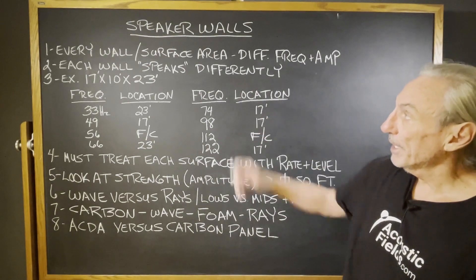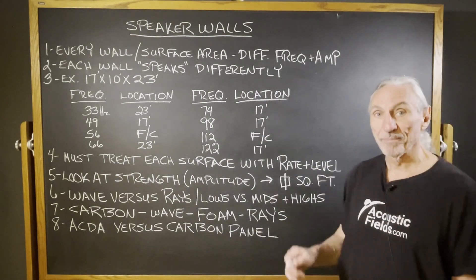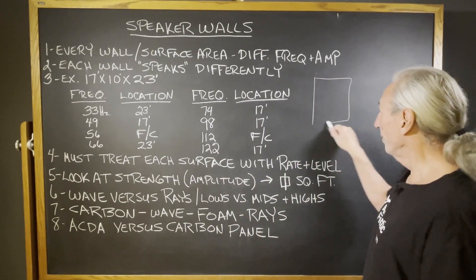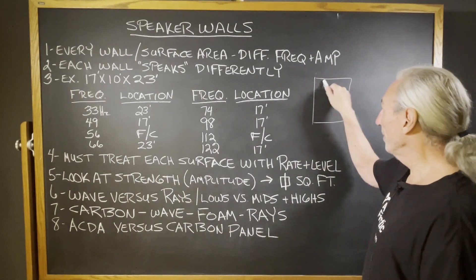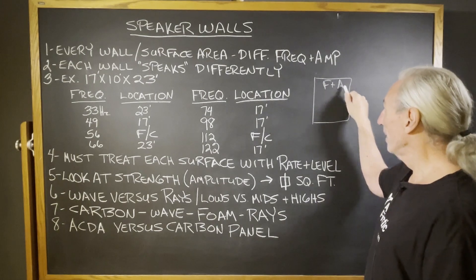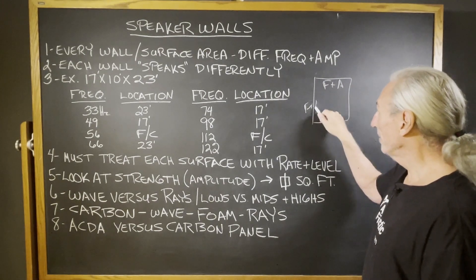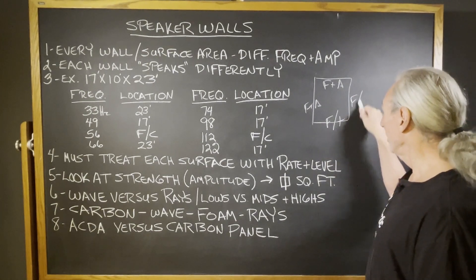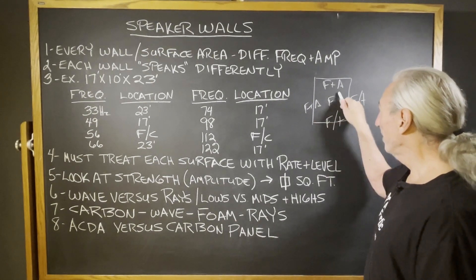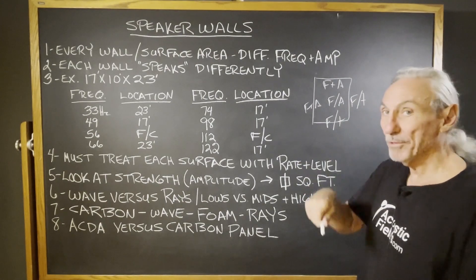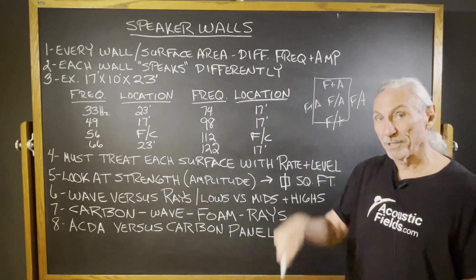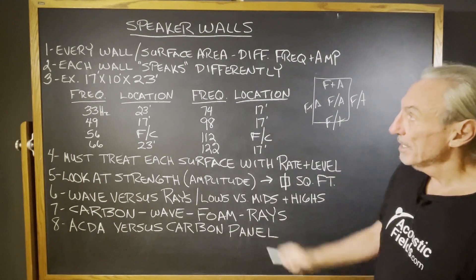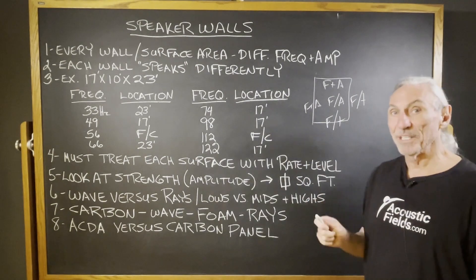We have to realize that every wall surface area has a different frequency and amplitude. We have frequency and amplitude here, here, here, and here. We also have the floor-to-ceiling dimension, because remember we have those three sound fields: floor to ceiling, side wall to side wall, and front to rear. Each wall speaks differently.